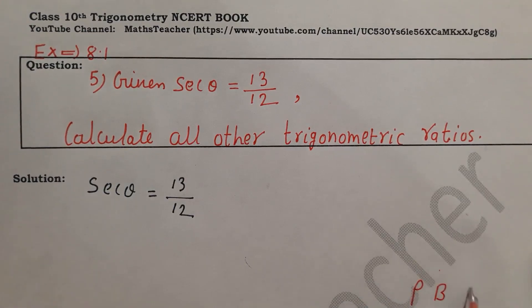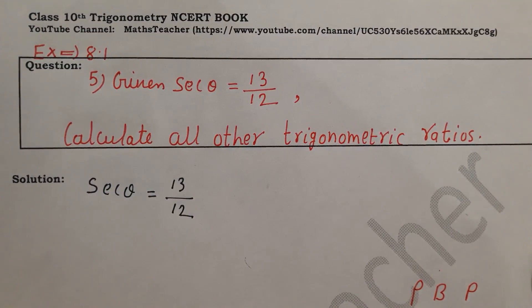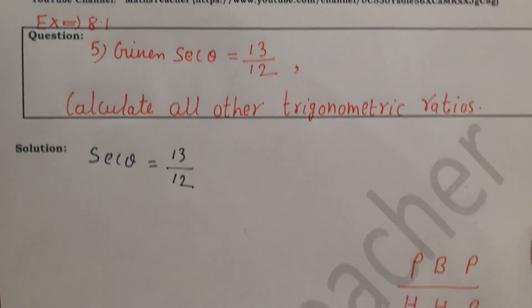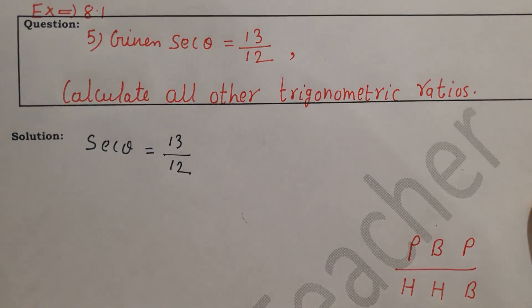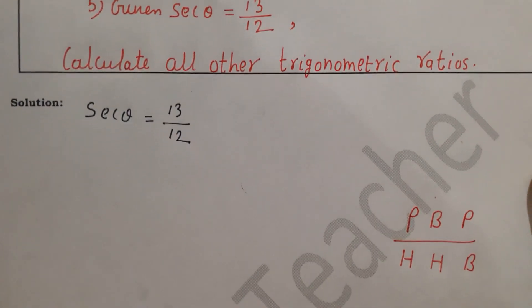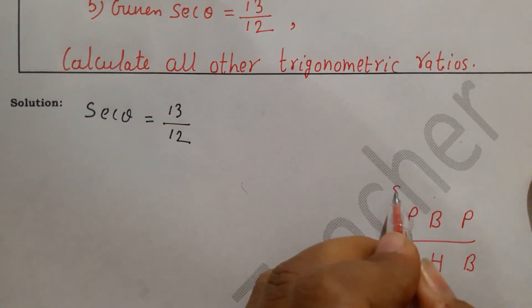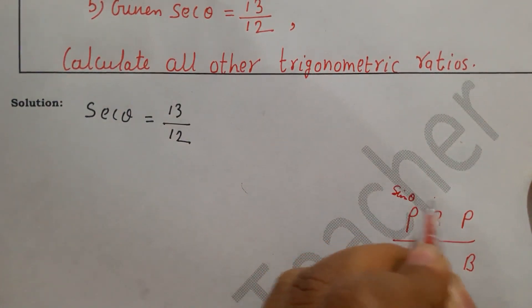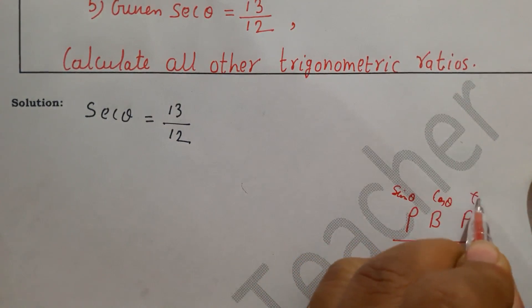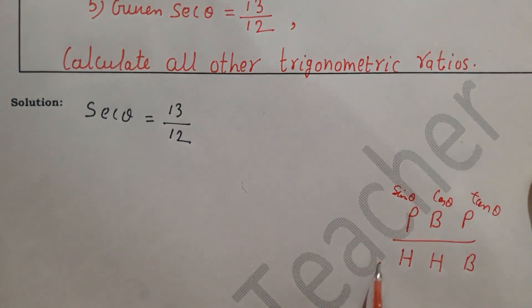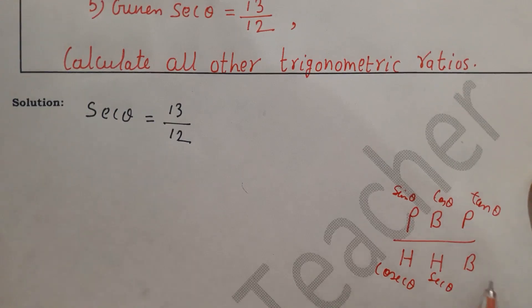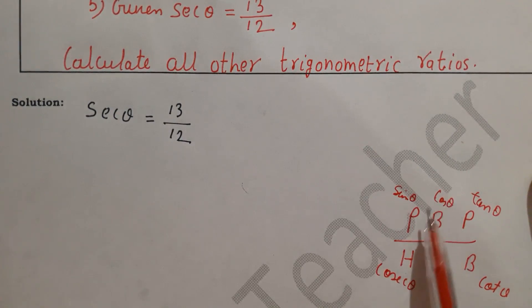P, B, H — Pandit Bhole Prasad — this is a way to remember the ratios. Pandit for perpendicular, Bhole for base, Prasad for hypotenuse, as numerator and denominator. Our ratios are: sin theta, cos theta, tan theta, cosec theta, sec theta, and cot theta.